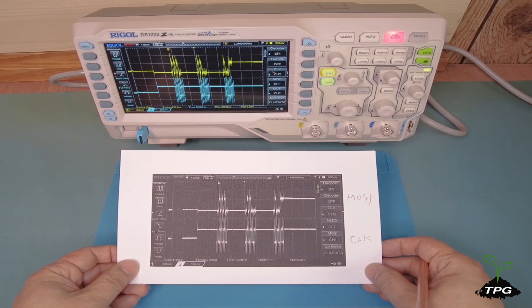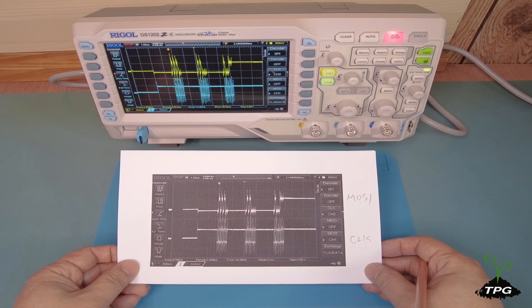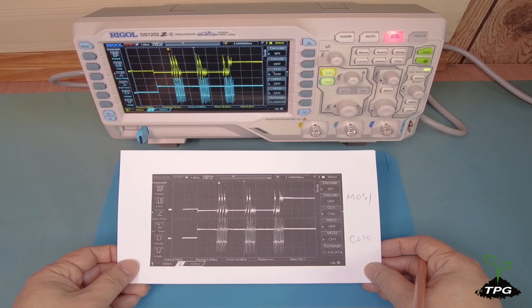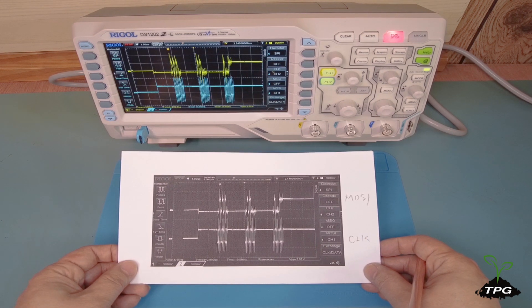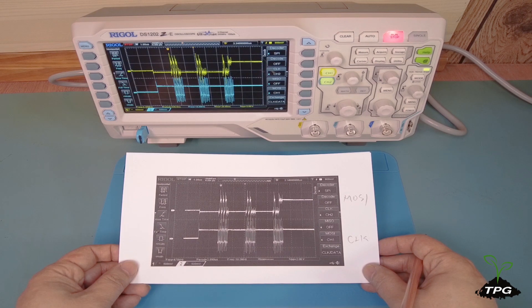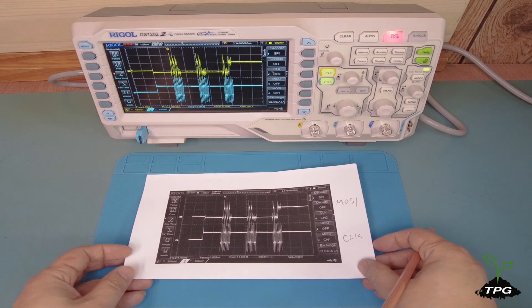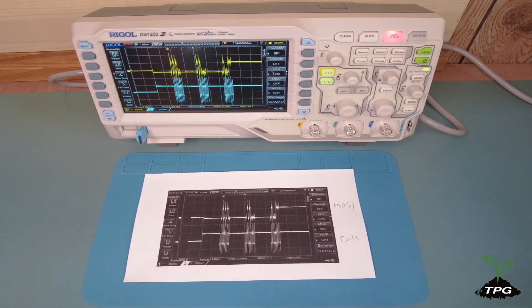The top waveform represents the MOSI data line, while the bottom waveform represents the clock line. The SPI master controls the data traffic on the MOSI data line and provides the SPI clock signal via the clock line.